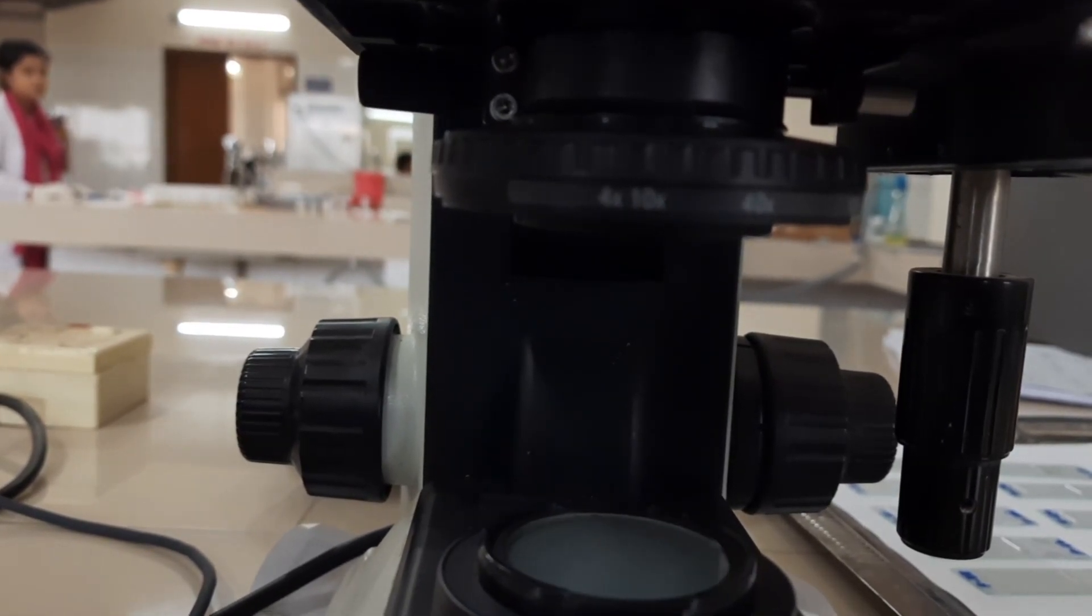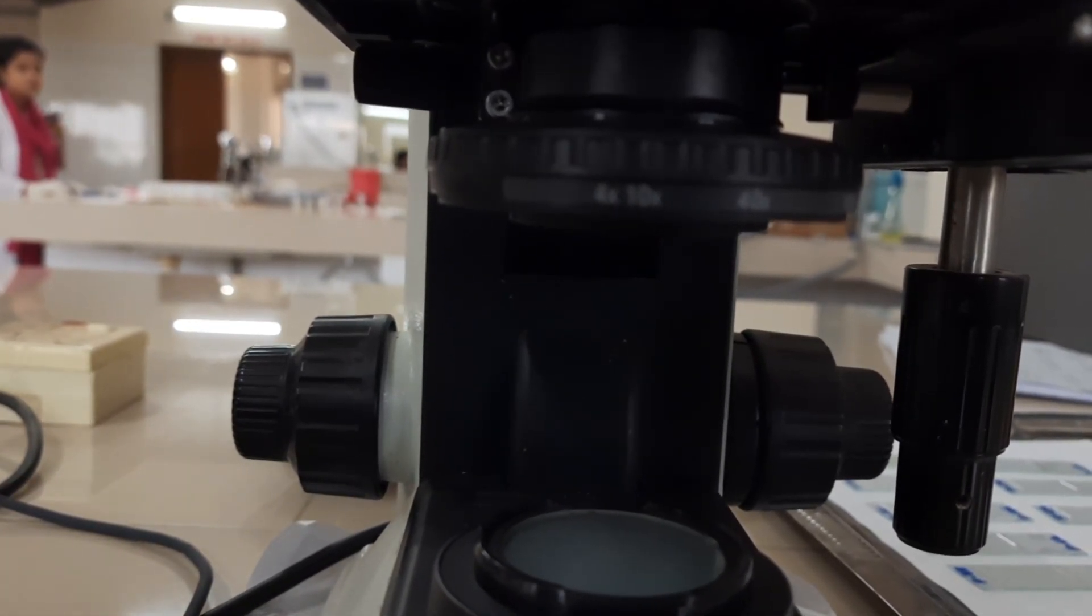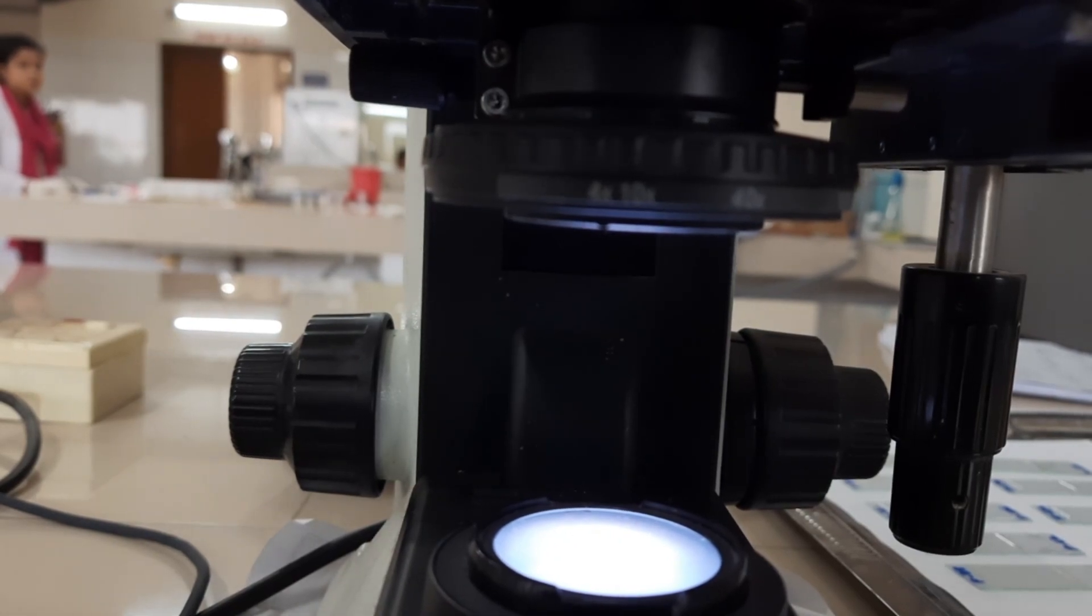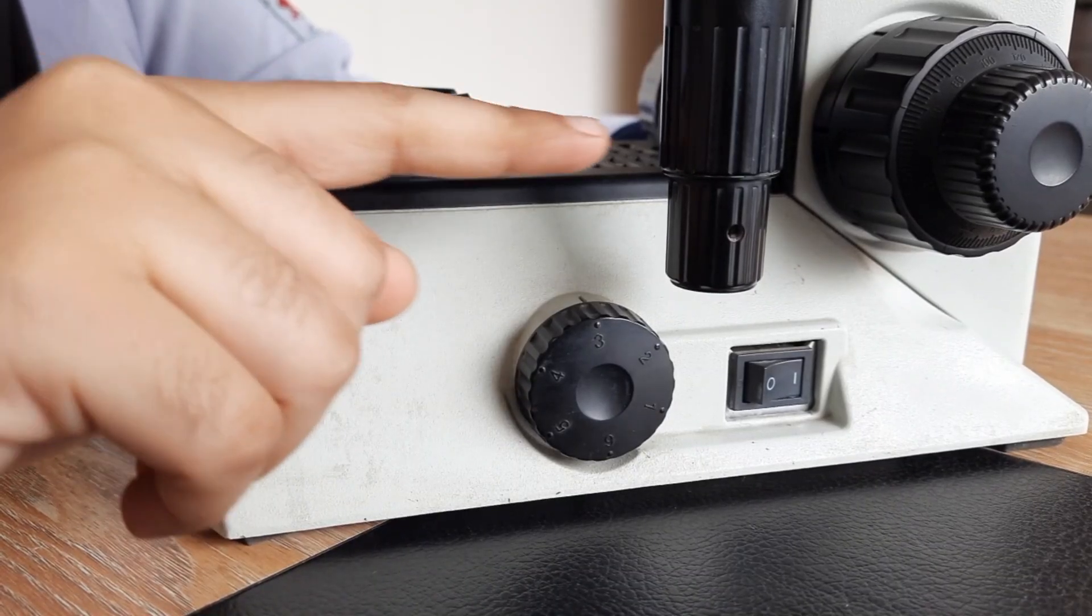A light source, often located in the base of the microscope, provides the necessary illumination for your specimen. It can be adjusted according to your need by a regulator.